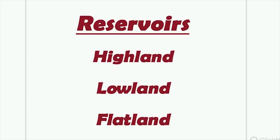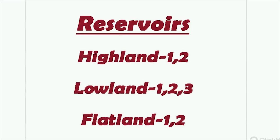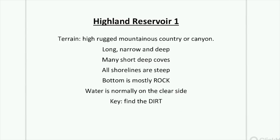As we all know, Buck has broken down reservoirs into three categories: highland, lowland, and flatland. When it comes to highland, he has highland one and highland two. When it comes to lowland reservoirs, he has them categorized as lowland type one, two, and three. And flatland is a one and a two. So let's take a look at highland reservoir one.